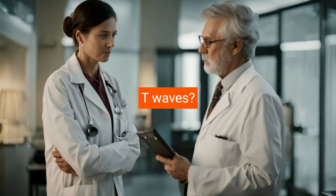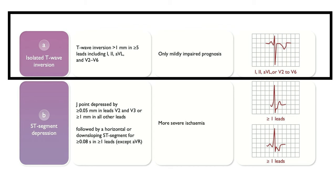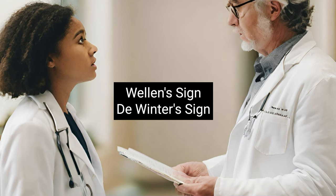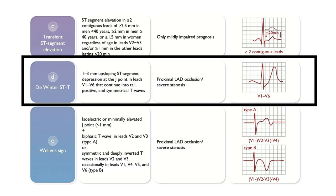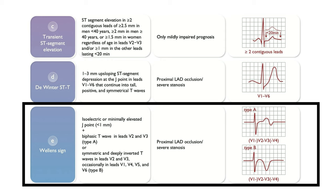Regarding T waves: T wave inversion has less prognostic value than ST depression, but can be an independent predictor of adverse outcome when observed in more than five or six leads. Other ECG abnormalities highly suggestive of severe coronary disease include the Winter's sign — one to three millimeters of upsloping ST depression at the J point in V1–V6 continuing into tall, positive, symmetrical T waves, highly suggestive of proximal LAD occlusion — and the Wellens sign — minimal J point elevation with biphasic T waves in V2–V3, or deep symmetric T wave inversion in V2–V3 extending up to V6, also highly suggestive of proximal LAD occlusion.